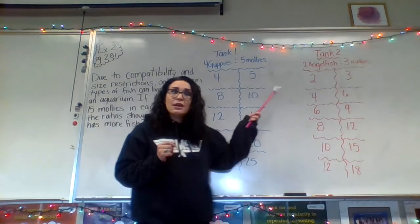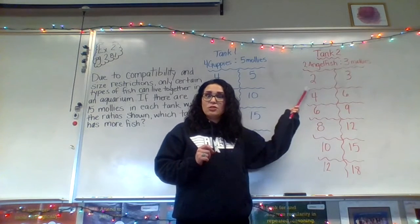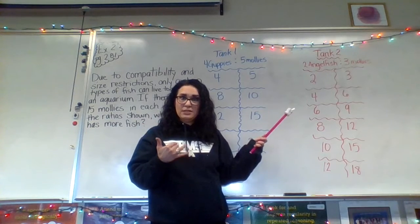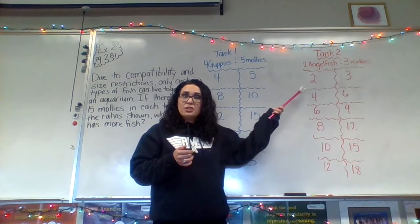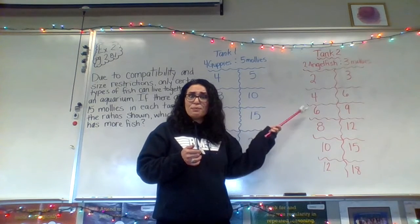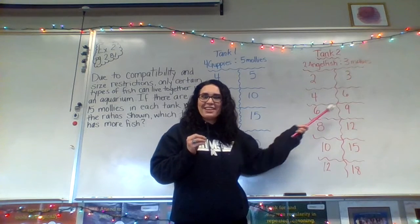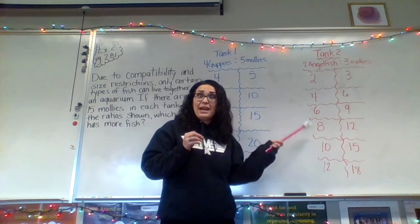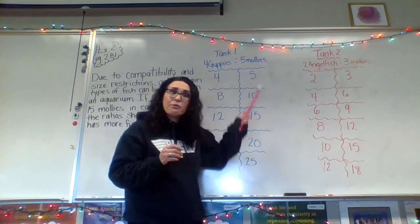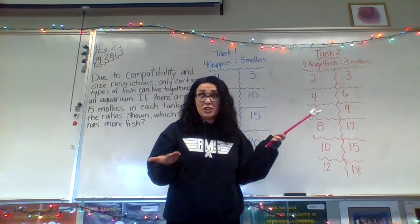Now let's look at tank two. The original ratio was two angelfish to three mollies. If we double it: four angelfish to six mollies. Triple it: six angelfish to nine mollies. Quadruple it: eight to 12. Then 10 to 15, 12 to 18. Again, we've just taken the same ratio and created equivalent ratios for tank two.